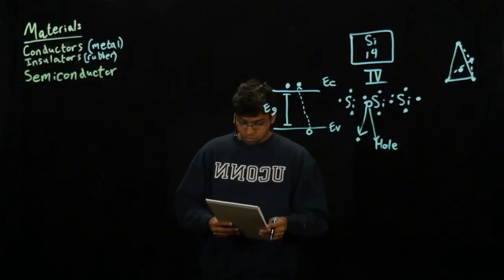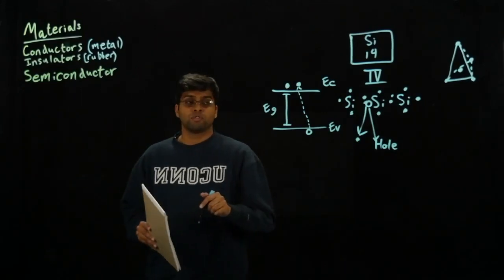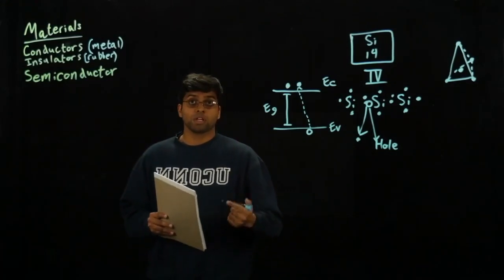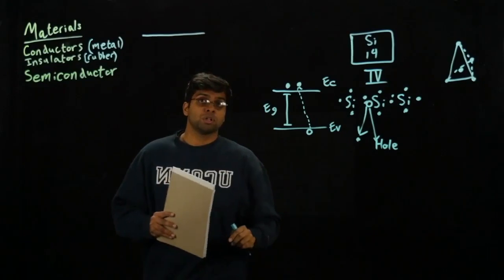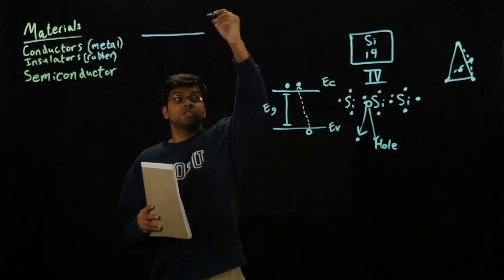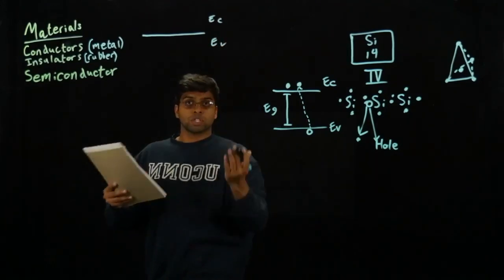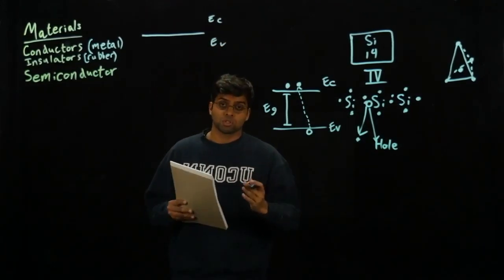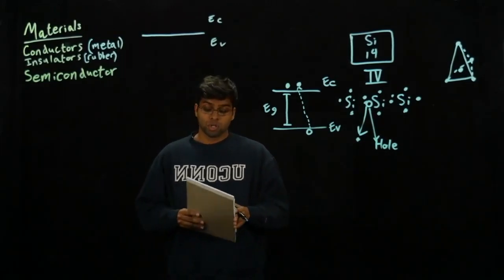If you relate this back to what I went over before, the reason metals are able to allow for the flow of electrons is that when you look at their band gap, it's actually really small. The conduction and valence band are pretty much on top of each other, so that means you have movement between electrons and holes constantly, and that's what allows metals to conduct really easily.